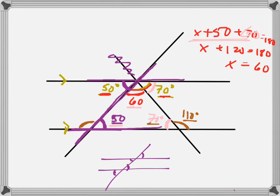And what's this angle out here got to be? What's that angle have to be? 120. Not 120. What's 120 plus 50? 170. Oh. What does it have to be?